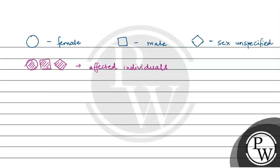You can see a mating like this. For example, if the male is mating with the female, you draw a line horizontal. So this is mating.